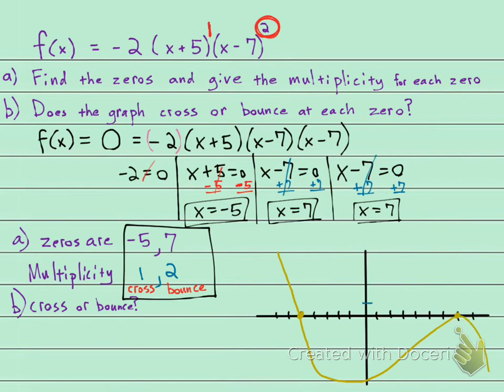I have no idea what these numbers are. I think that they're huge, but this is the general shape and idea of the graph. Zeros, multiplicity, behavior: cross, bounce. I hope you enjoyed it.